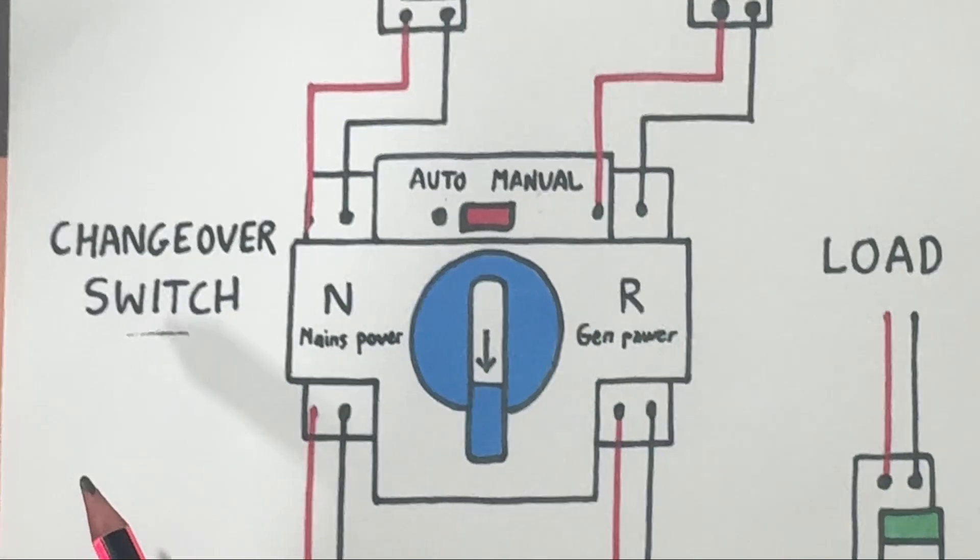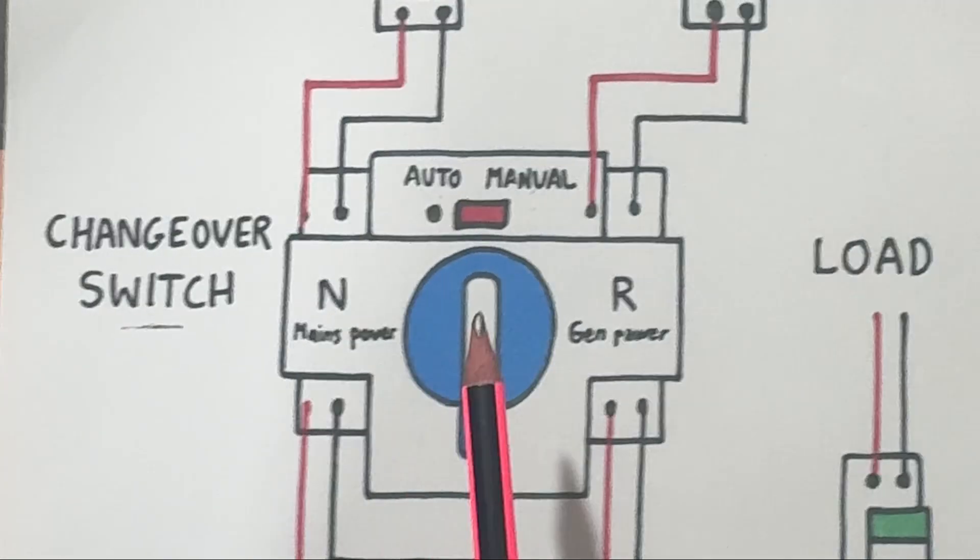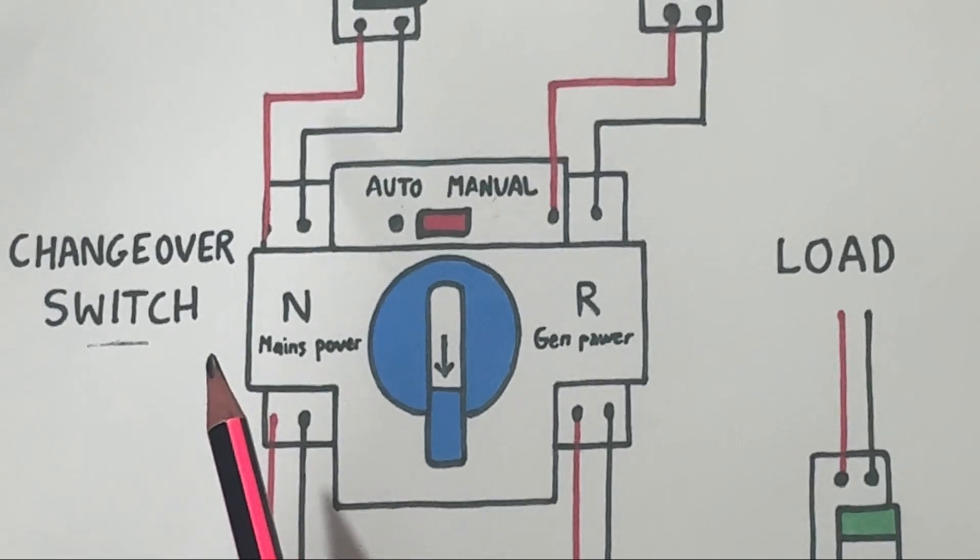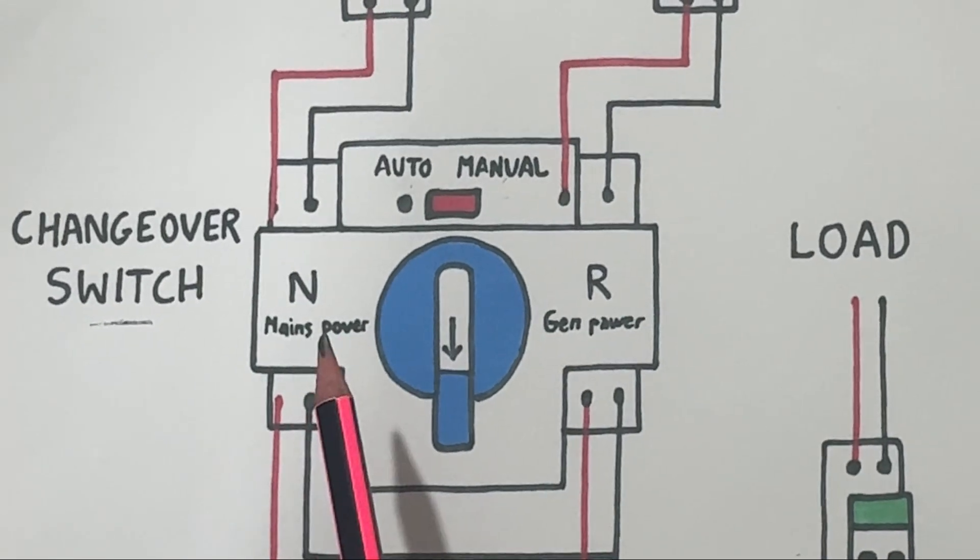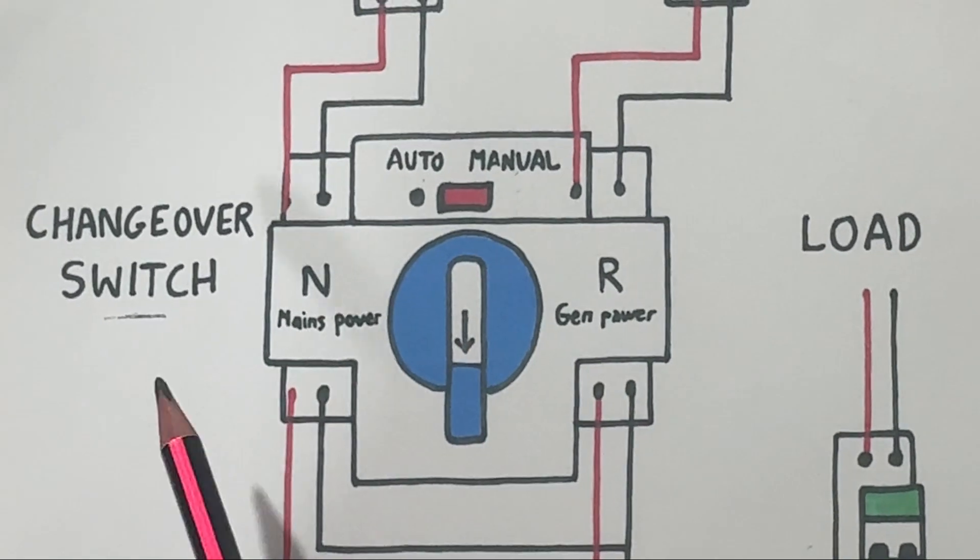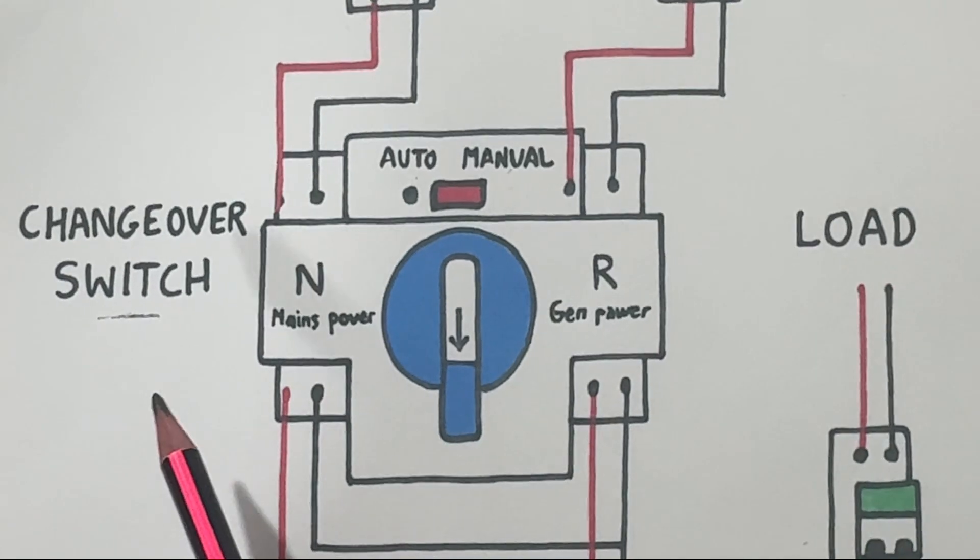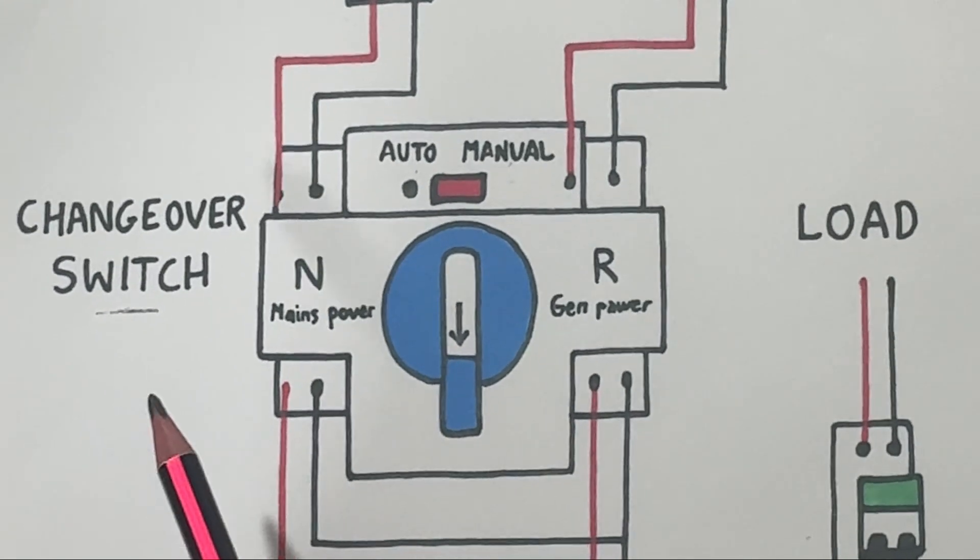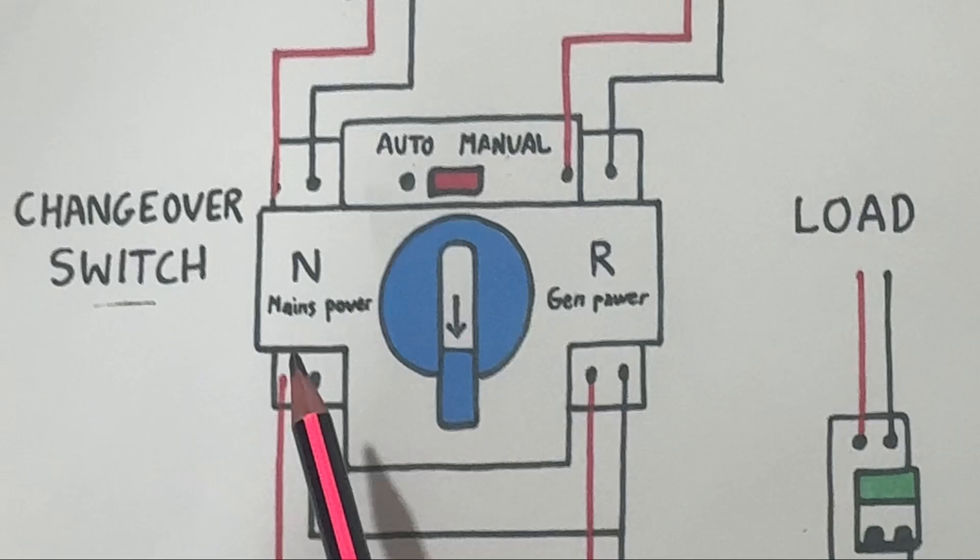When grid power fails, the ATS automatically starts the generator. Once the generator starts producing electricity, the ATC transfers the load to the reserve side, that's the generator power.